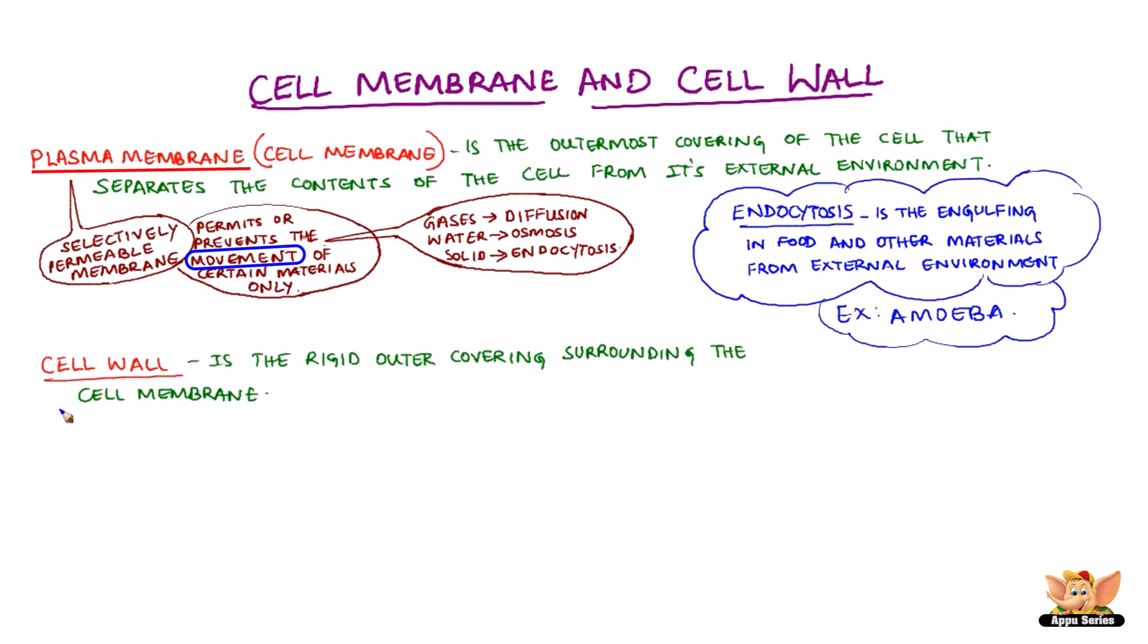Cell wall is the rigid outer covering surrounding the cell membrane. It is made up of cellulose. It helps to withstand the cell swelling without bursting.